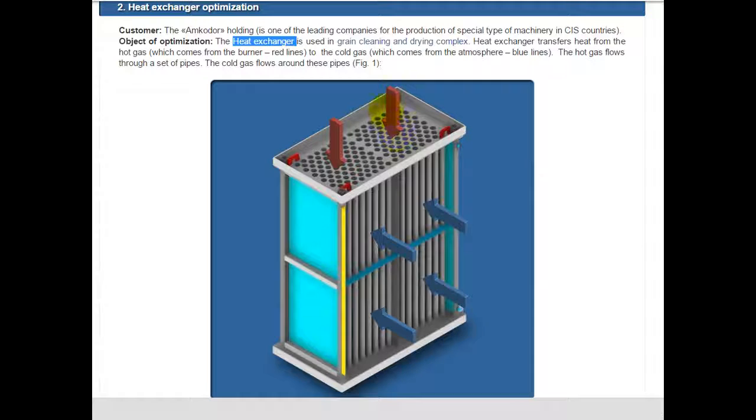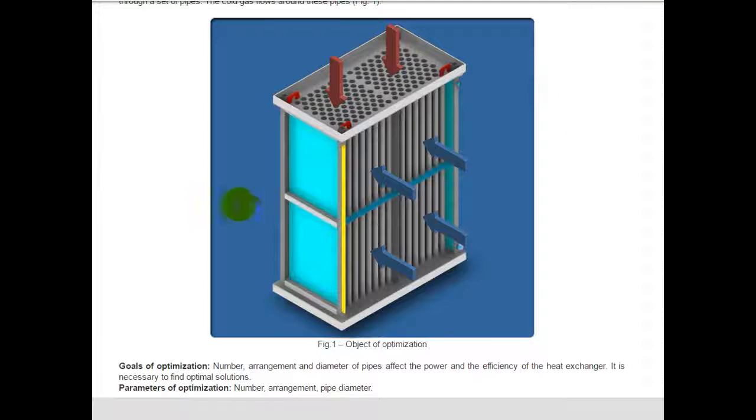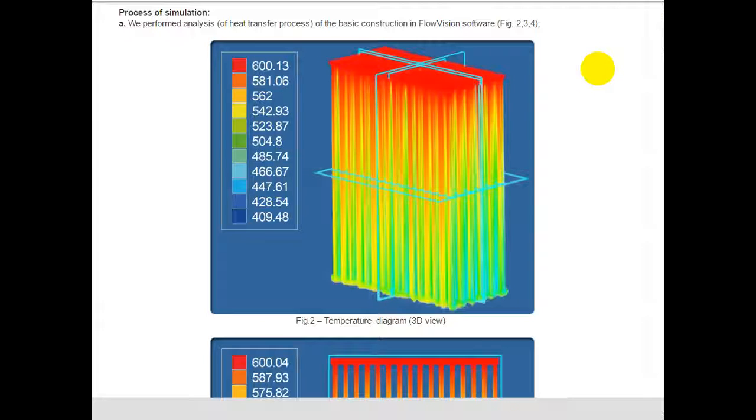The hot gas flows through a set of pipes, and the cold gas flows around these pipes. Goals of optimization: the number, arrangement, and diameter of pipes affect the power and efficiency of the heat exchanger. It is necessary to find optimal solutions. Parameters of optimization are number, arrangement, and pipe diameter.